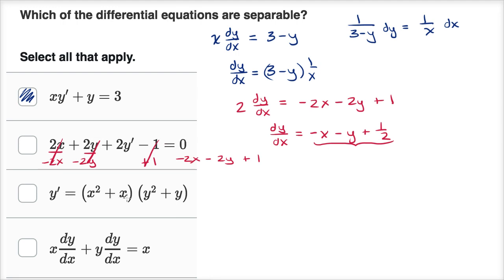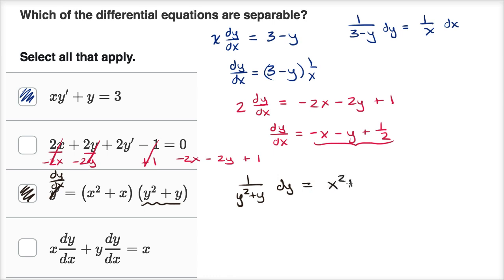The third equation has already been written as a function of x times a function of y, so it's clearly separable. Multiplying both sides by dx and dividing by (y² + y) gives one over (y² + y) dy equals (x² + x) dx. Clearly separable.